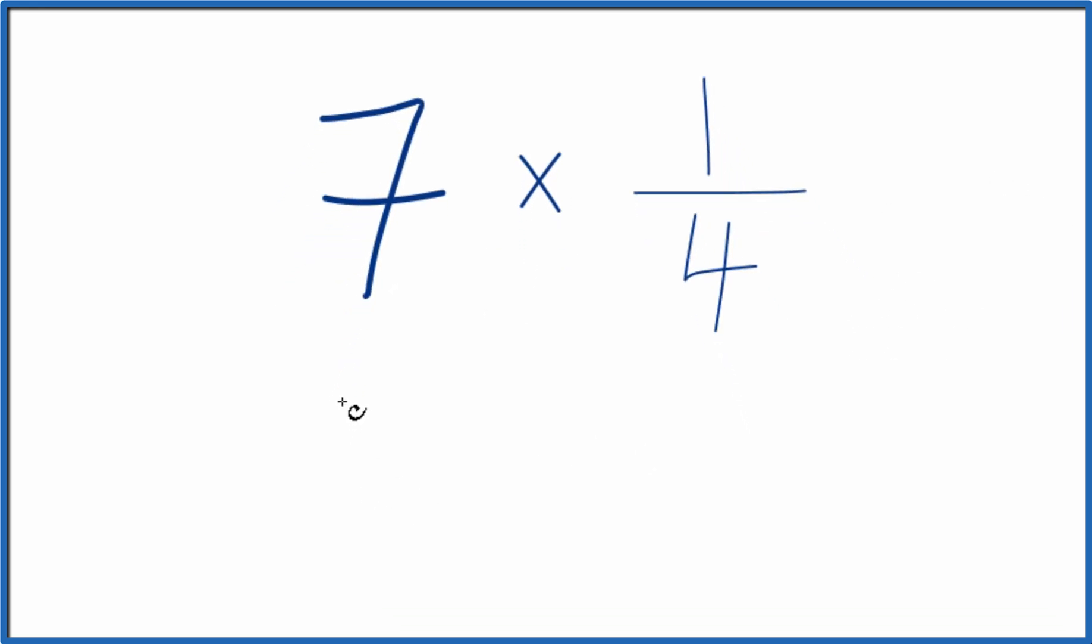Another way to do this would be to take 7 and consider that 7 over 1. 7 over 1, that's the same as 7, we're just dividing by 1.